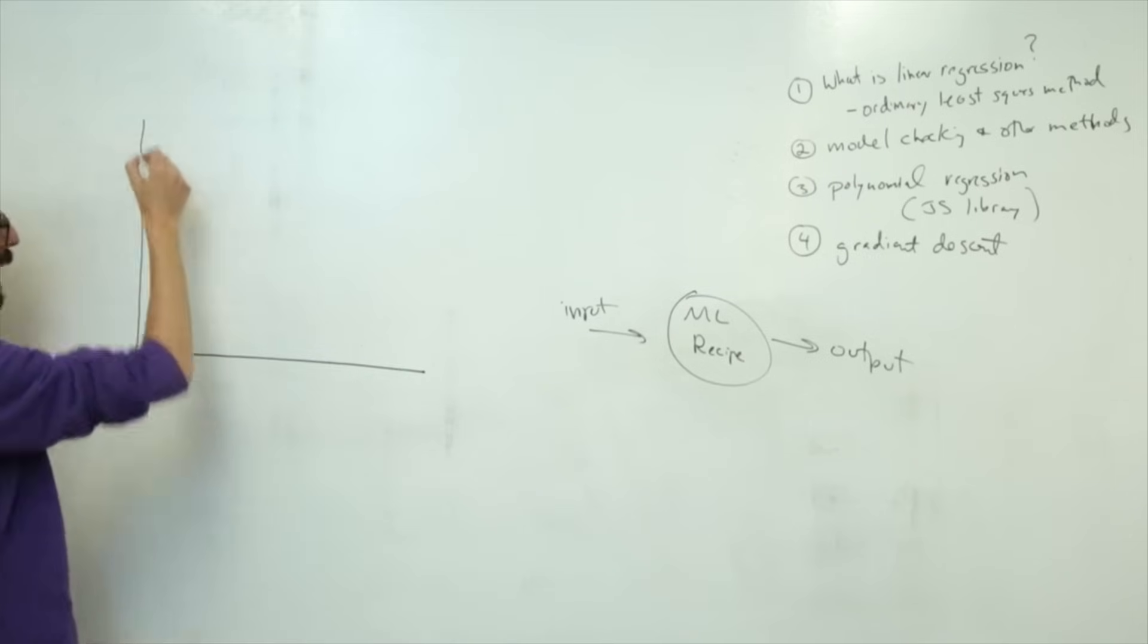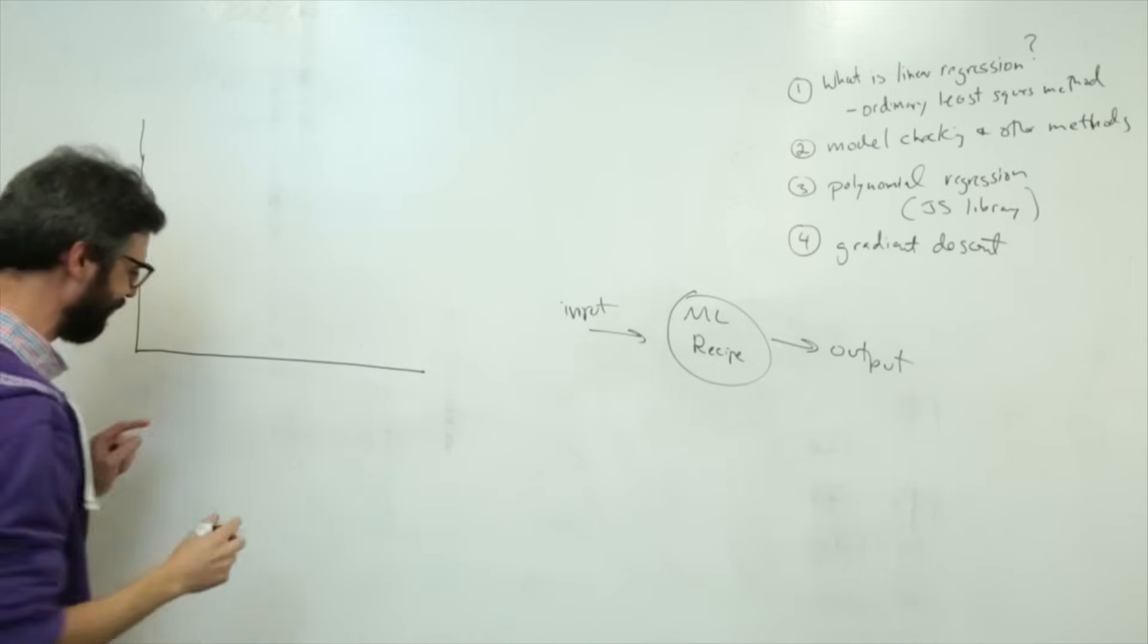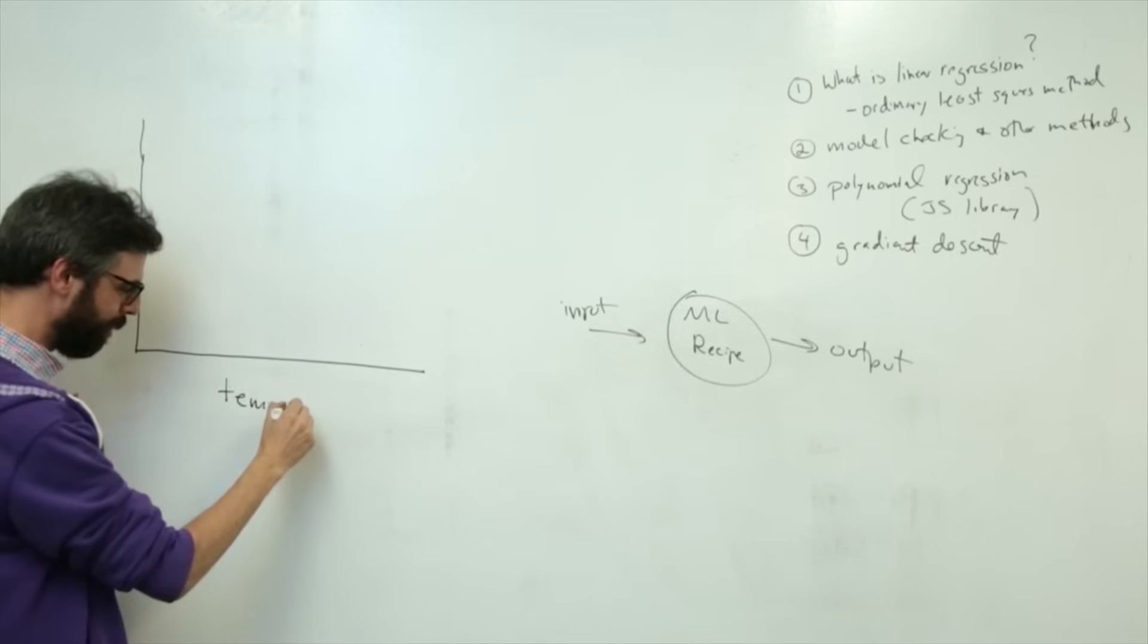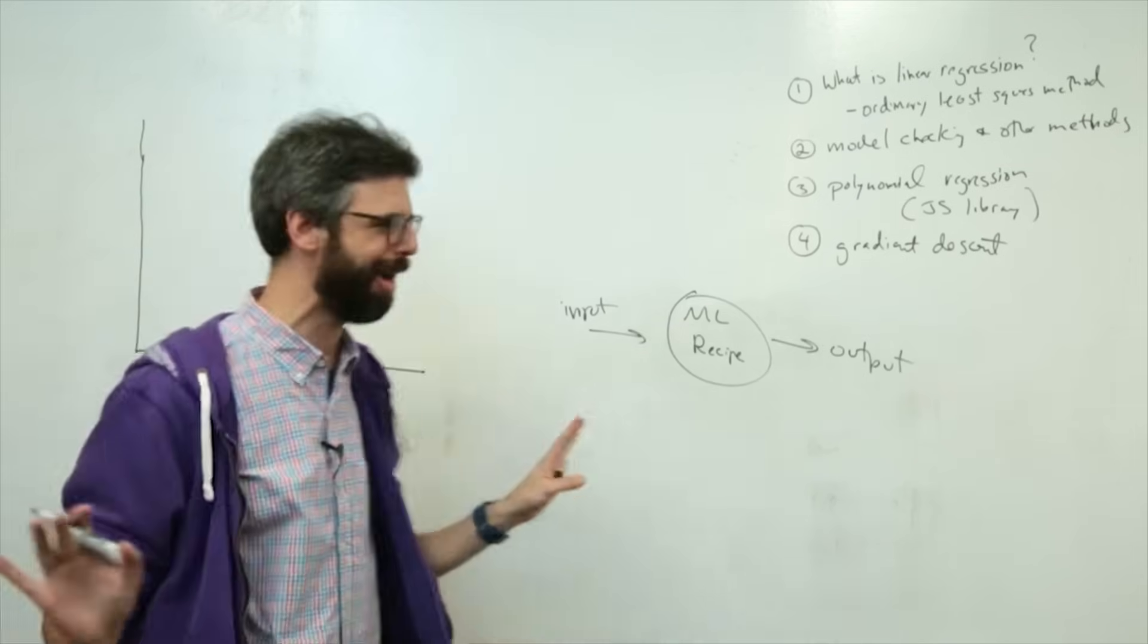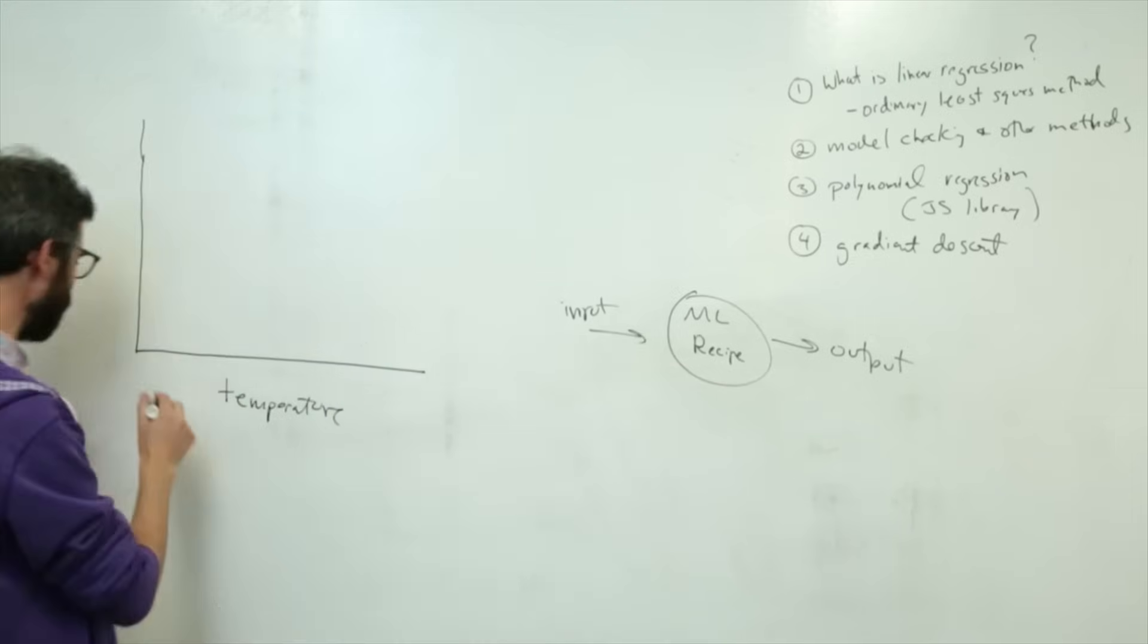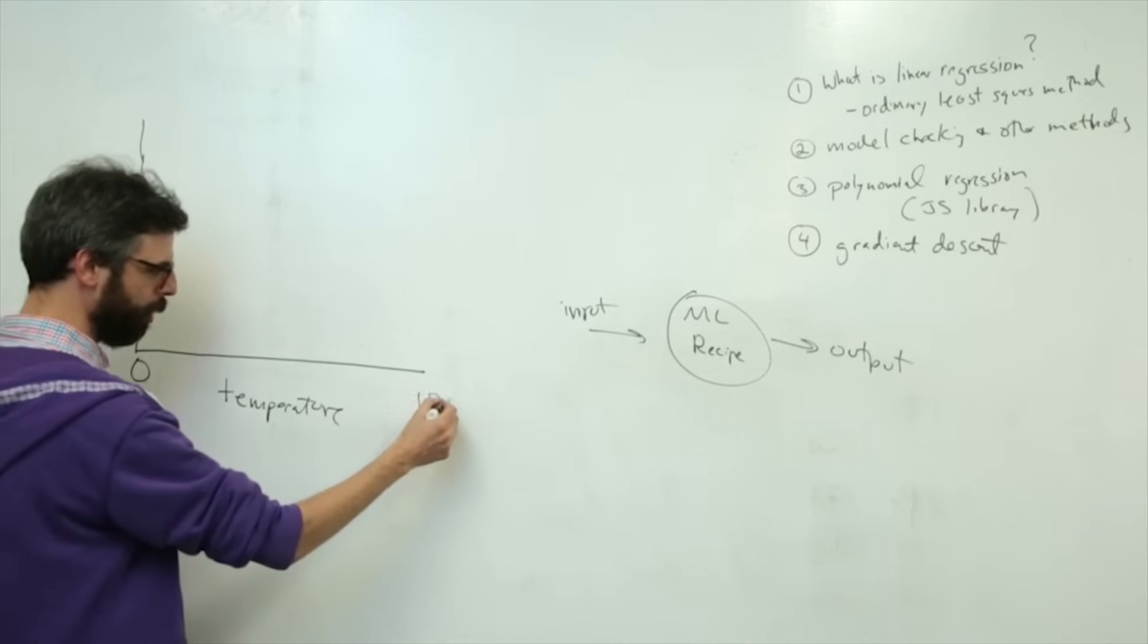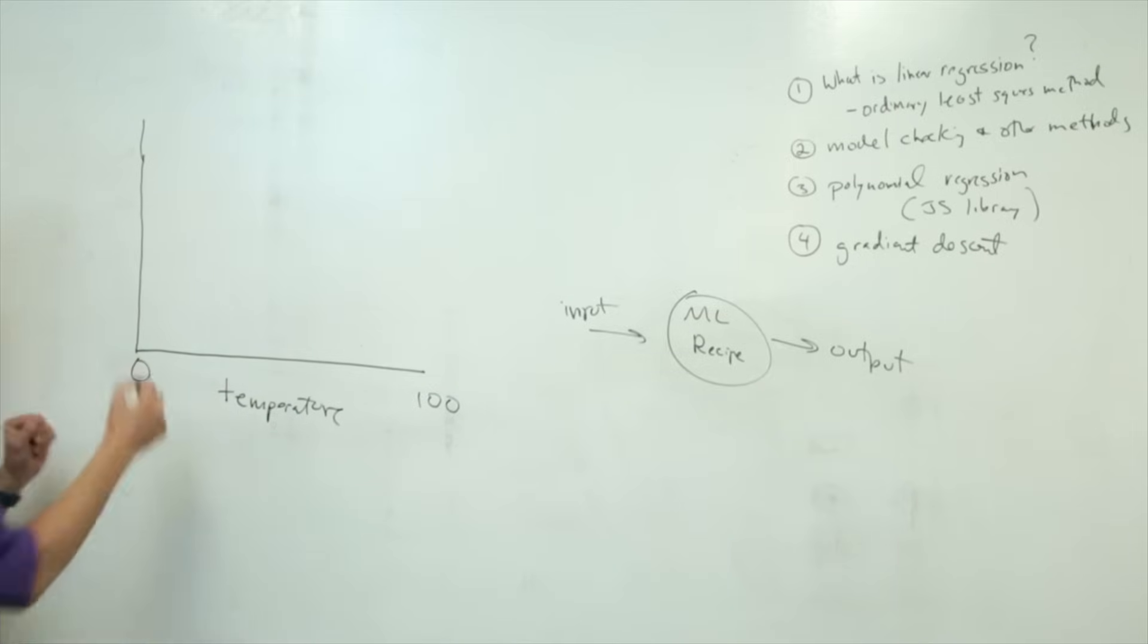Let's take the simplest scenario of inputs related to outputs, a simple scenario would be something like a two-dimensional dataset. We could graph using something called a scatterplot a dataset. The x-axis I want to think of as temperature, zero degrees to 100 degrees Fahrenheit.